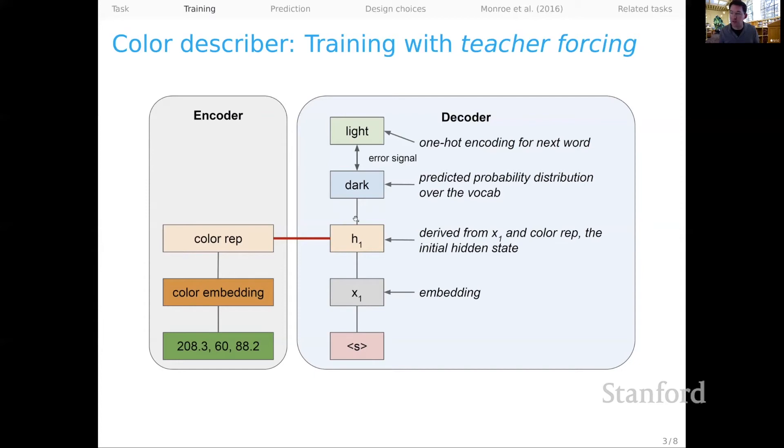And then we have softmax parameters on top of that h1 that make a prediction. The prediction that they make is a prediction over the entire vocabulary. And the probability of the actual token gives us our error signal. So the probability of light is the error signal that we'll use here to update the model parameters.